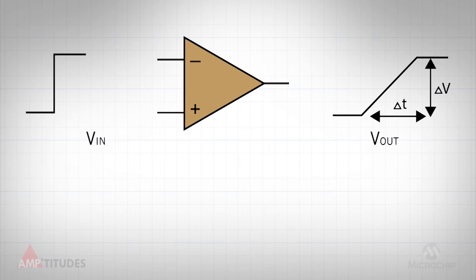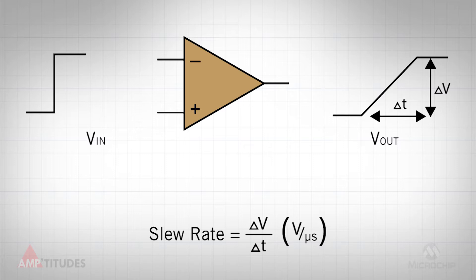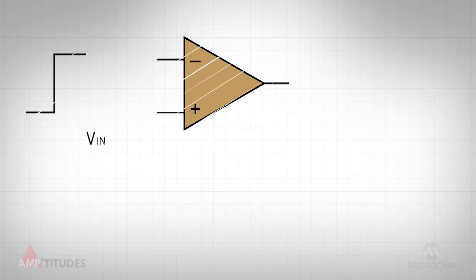The slew rate of an amplifier is the maximum rate of change of the output voltage, and is typically specified as volts per microsecond. In order to reproduce a signal without distortion, the amplifier must be able to change the output just as fast or faster than the input signal of interest.